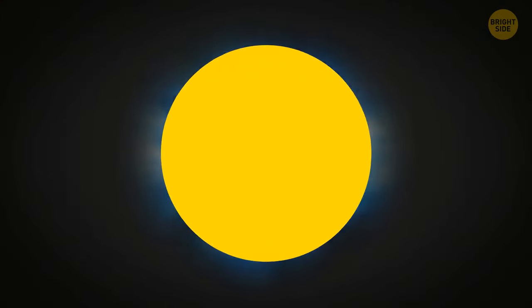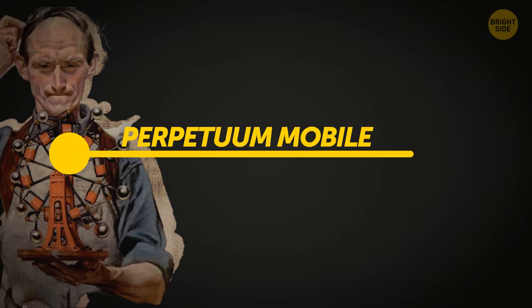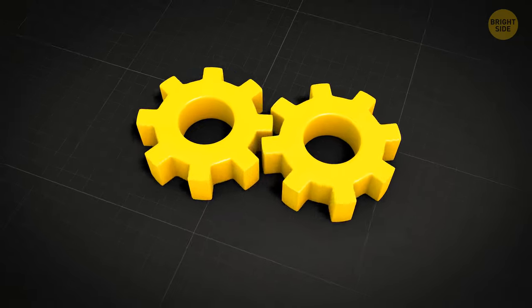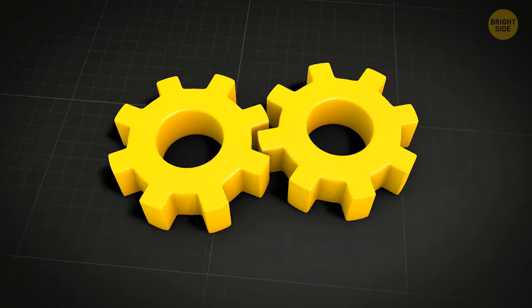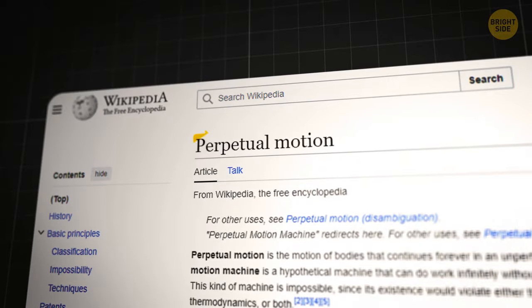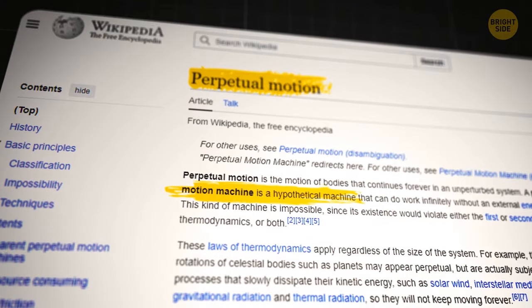Wouldn't it be cool to have an eternal source of energy to power our world? Such a machine would be called a Perpetuum Mobile. That's Latin for constant movement. Once you set this machine in motion, it would continue working forever until someone or something stopped it. Sounds ideal, but for now, perpetual motion is only a hypothesis.